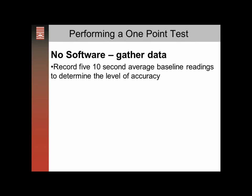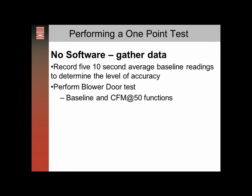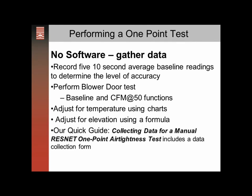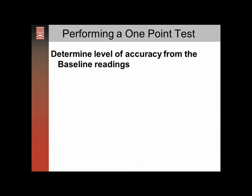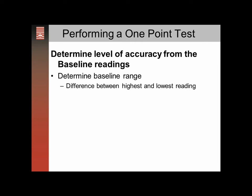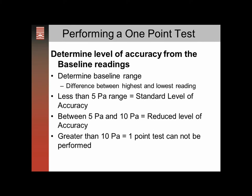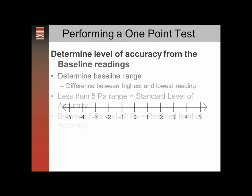For no-software data gathering, you have to record five ten-second average baseline readings. Those baseline readings, when you're not using software, are only used to determine the level of accuracy. Then you'll perform the blower door test like you normally do and adjust for temperature using charts and for elevation using the formula. We do have a quick guide and a test form for collecting that data for a manual one-point test. Then you'll determine the level of accuracy from the baseline readings — determine the baseline range, the difference between the highest and lowest reading. If that range is less than 5 pascals, it's considered a standard level of accuracy; between 5 and 10, a reduced level of accuracy.